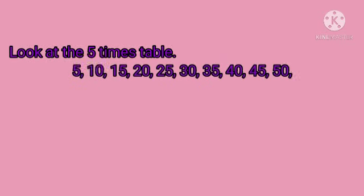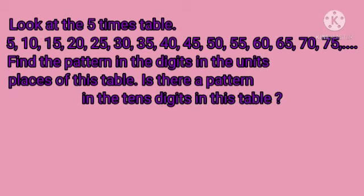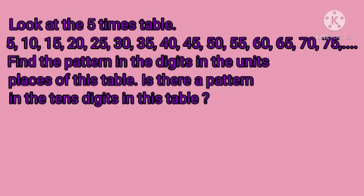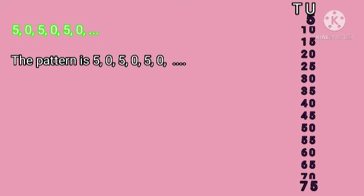Now look at the 5 times table: 5, 10, 15, 20, 25, 30, 35, 40, 45, 50, 55, 60, 65, 70, 75 and so on. Find the pattern in the digits in the unit place. The digits in the unit place are: 5, 0, 5, 0 — and so on. The pattern is 5, 0, 5, 0, 5, 0 and so on.